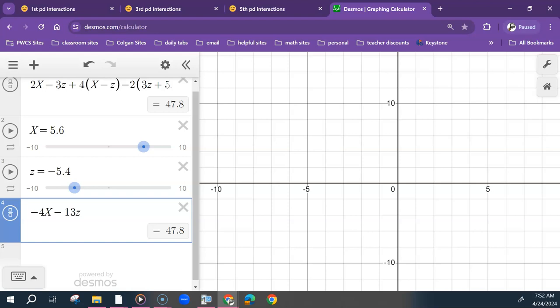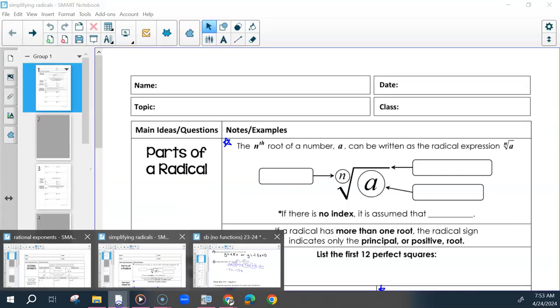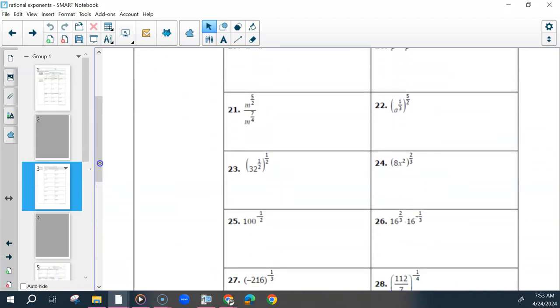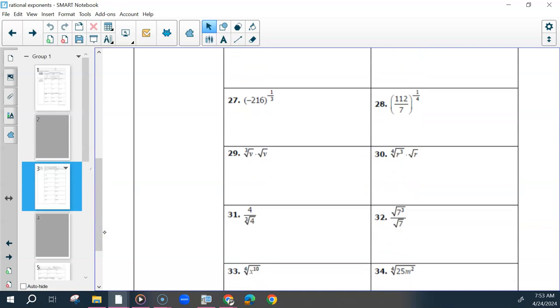Alright, look at your rational exponents notes. We're going to finish that today. So I wanted to say the last one we did was 27. And then a lot of the ones we did yesterday were all in exponential form. We used our rules, converted it to radical form, and then simplified if needed. Now some of the bottom ones are in radical form. We're going to convert it back to exponential form, and then do all those steps.